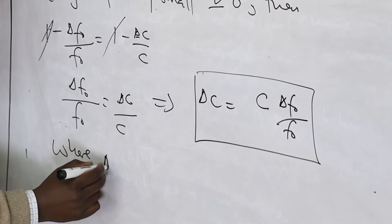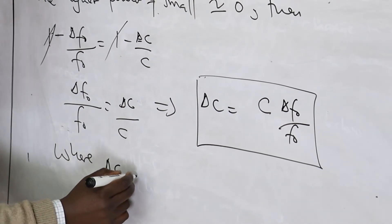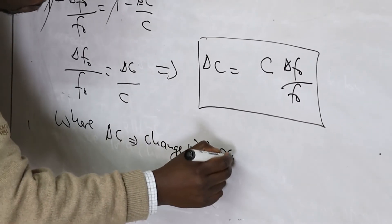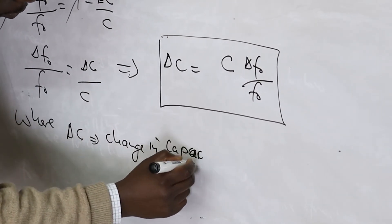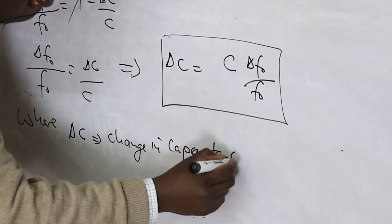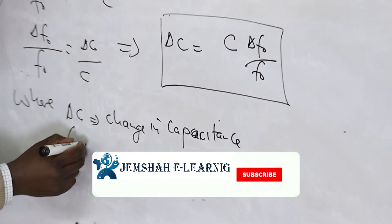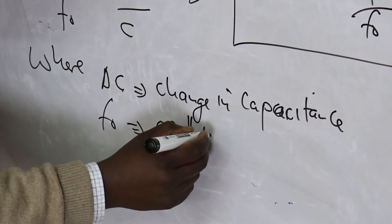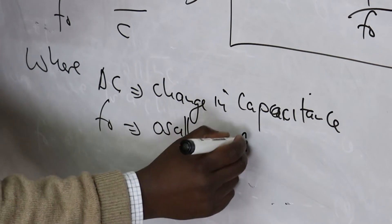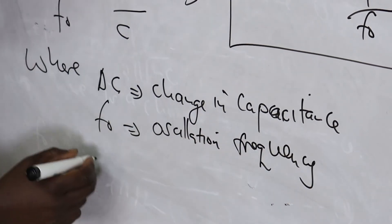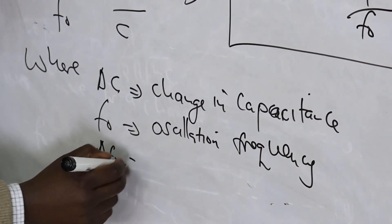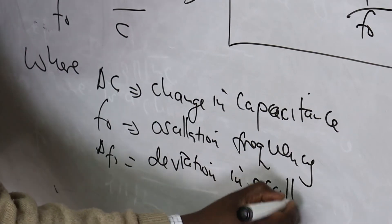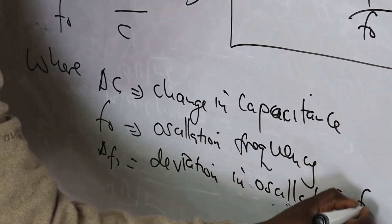This implies that δC is supposed to be C times δF₀ over F₀, where δC is the change in capacitance and δF₀ is the deviation in oscillation frequency.